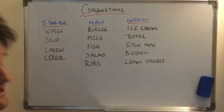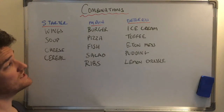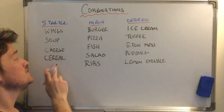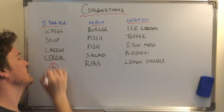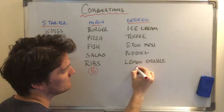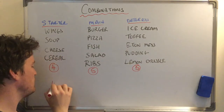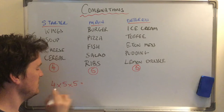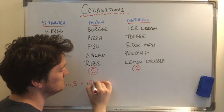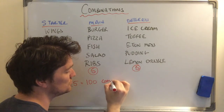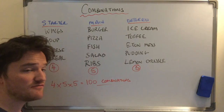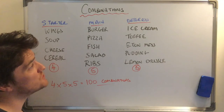Our menu is now a lot bigger. With the same logic, how many combinations are possible? We have four choices for starter, five for main, and five for dessert. Four times five times five: five times five is twenty-five, and twenty-five times four is one hundred — so there are one hundred combinations or options.